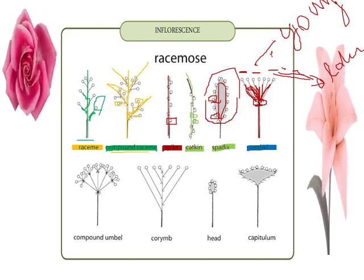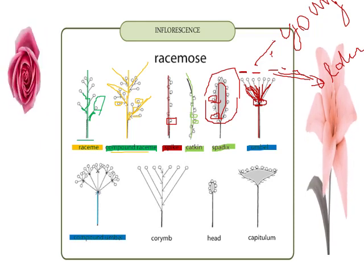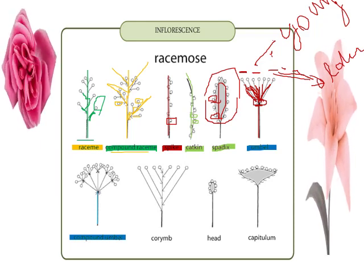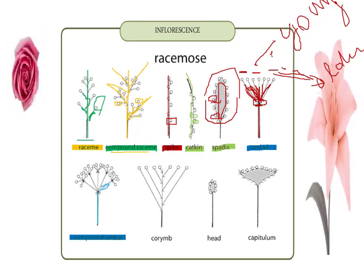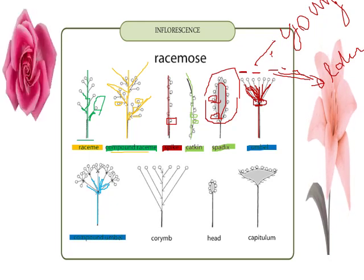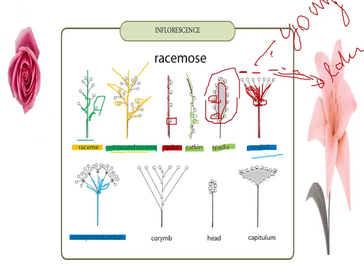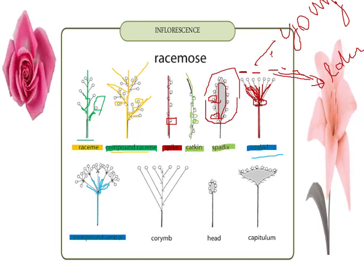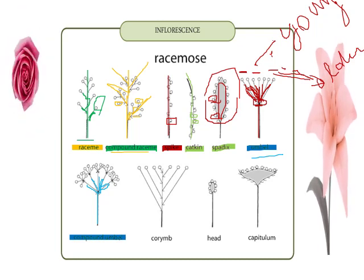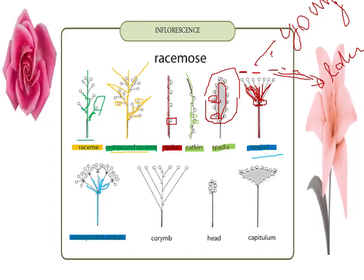Next we have compound umbel. In this case, the main axis is further divided into branches, and each branch produces flowers the same as in umbel — in which all flowers originate from a common point, their size and length are equal, younger flowers are present in the center, and all older flowers are present in the periphery.